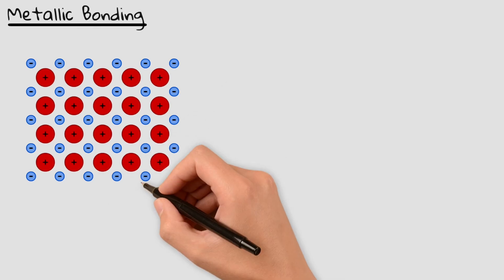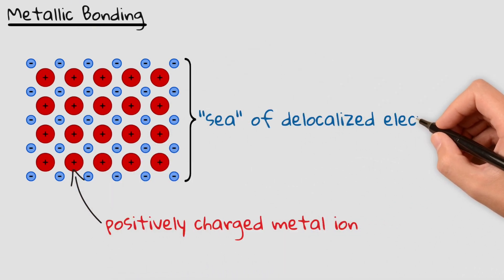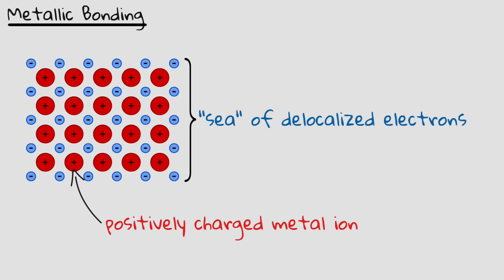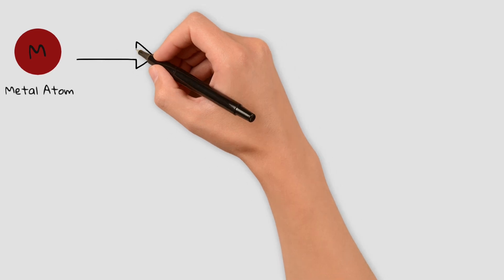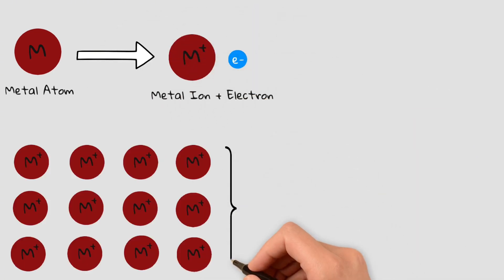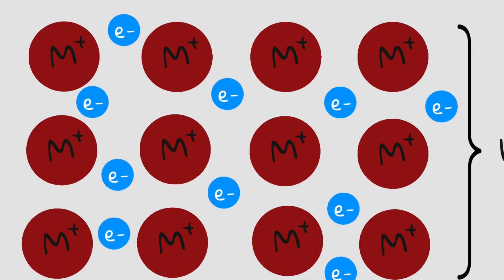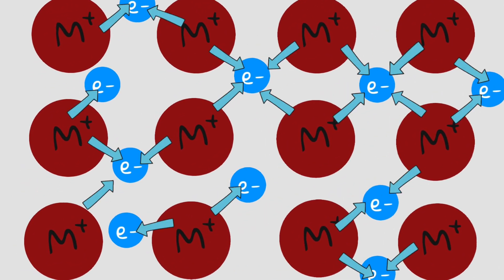Unlike ionic or covalent bonding, metallic bonding is the attraction between positively charged metal ions and a sea of delocalized electrons surrounding them. In a metal, atoms lose their outer electrons, forming positive metal ions arranged in a lattice structure. The lost electrons don't stay with one atom — instead, they move freely throughout the entire structure, creating a so-called sea of free electrons. These delocalized electrons hold the metal ions together with a strong force of attraction.